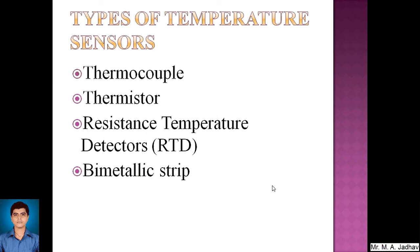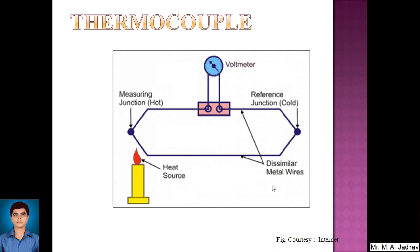Let's start with the thermocouple. The diagram or circuit view of the thermocouple is in front of you. The thermocouple is made up of two dissimilar metal wires, forming two junctions. One junction — the measuring junction — is called the hot junction, and the other — the reference junction — is called the cold junction. A voltmeter is connected between these two junctions.